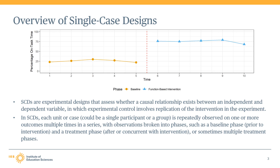The baseline phase corresponds to the A phase and the intervention phase is the B phase. This design has weak internal validity because events other than the intervention, such as those related to maturation or history, could be the true cause of the intervention effect. A student may have reached a developmental milestone at the same time as the onset of the intervention, or there may have been some change in the classroom that could have had an impact on the outcome.